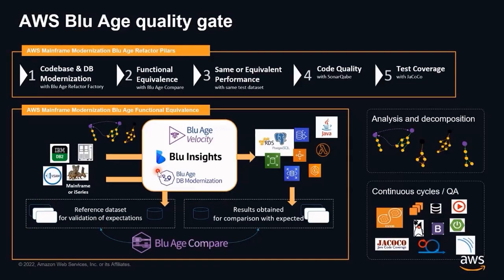The third pillar is equally the same as functional equivalence but applied to non-functional requirements such as performance. We engage with this process to produce an application that will behave in terms of performance the same as the legacy one — meaning batch elapsed time will be the same or better, response time to an online interface will be the same or better, as well as for screen-based scenarios.